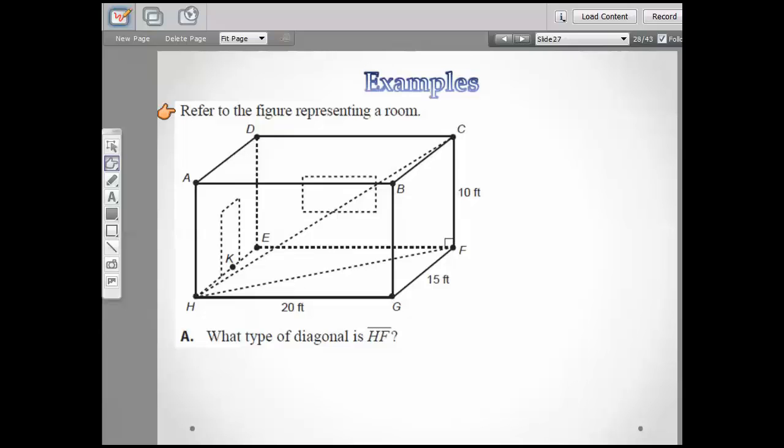It says refer to the figure representing a room. What type of diagonal is HF? Well, here I go. I like to draw my stuff here. Looks like to me HF is just a regular diagonal of a rectangle. So let's see what the answer is.